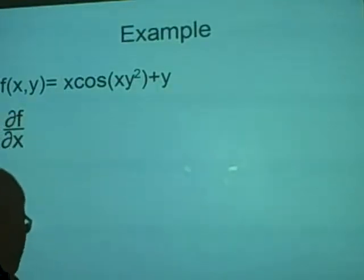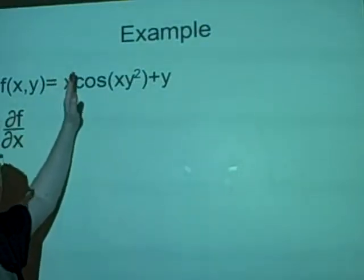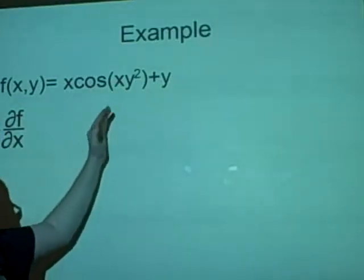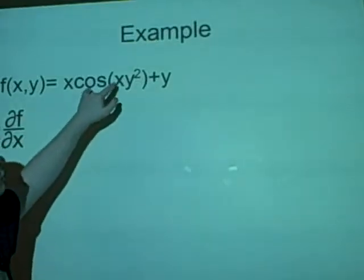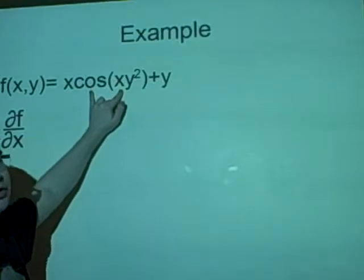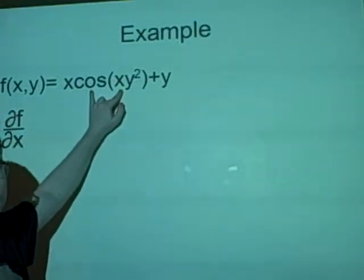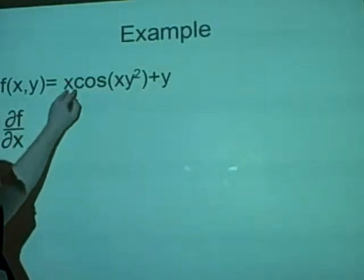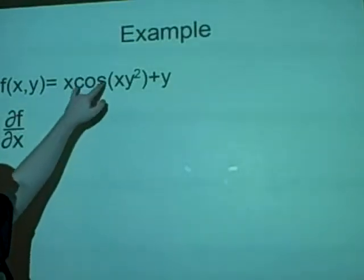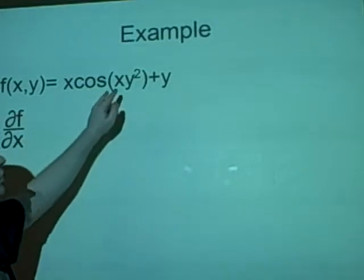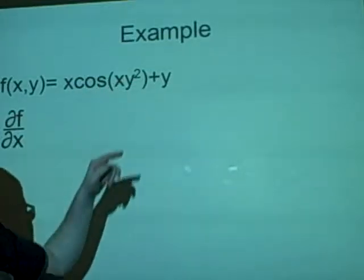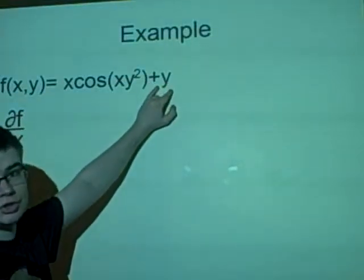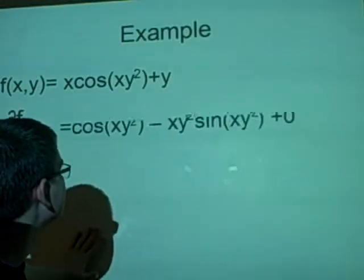So we have to use the product rule here. We'll differentiate the first, which will leave us one, and times it by this one. So we have cos(xy²) plus the derivative of this, which will be minus sin(xy²) times y². And then we have to times that by x. So we'll have minus xy² sin(xy²). And then this part is just a constant, and to differentiate that part, it just goes down to zero.